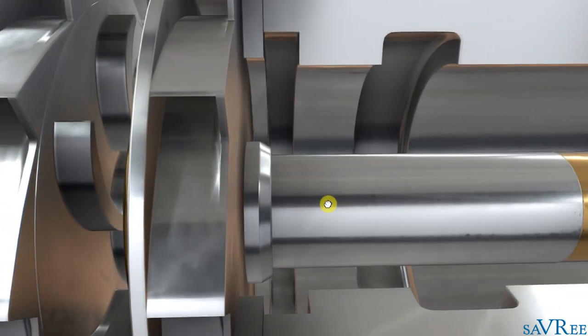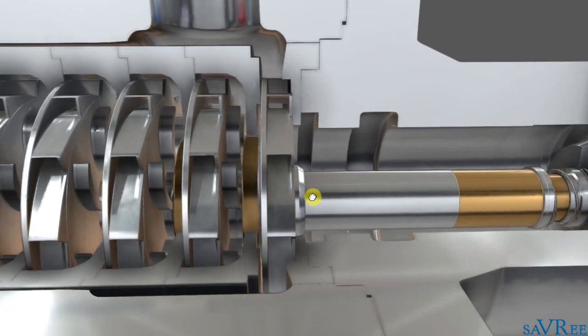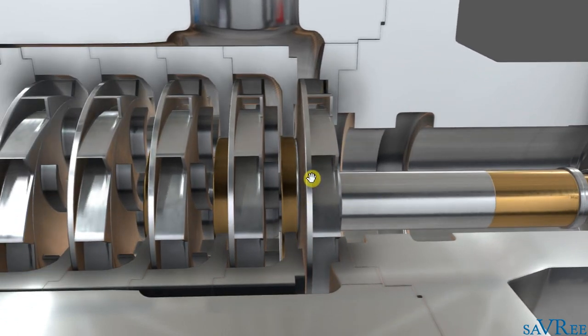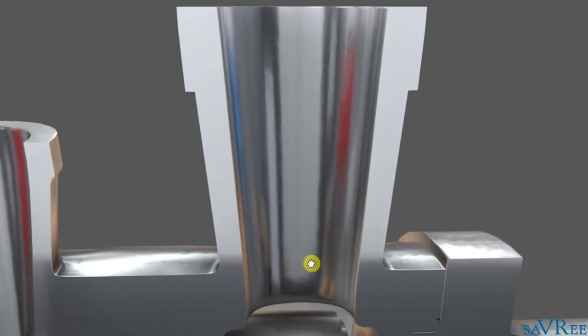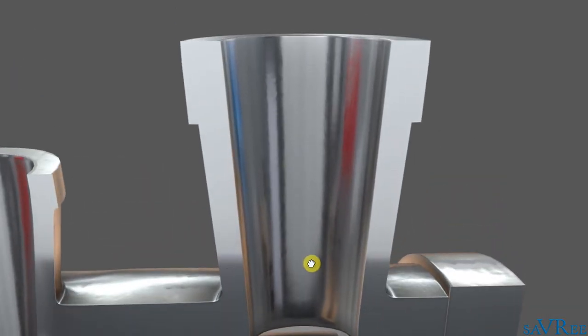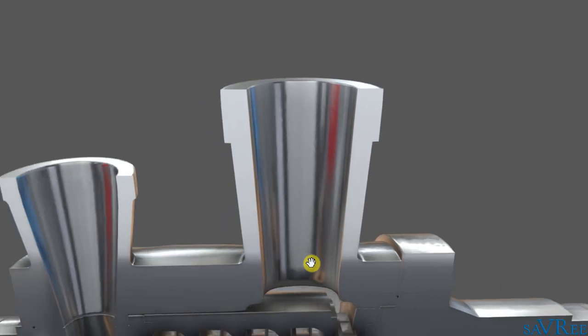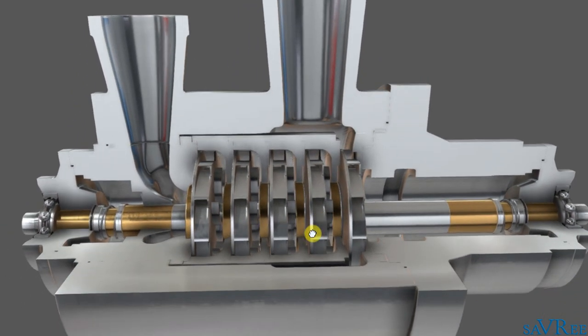Once we get to our final impeller, the liquid will be discharged and it will go out of the top here, out of this discharge pipe. So that is the general layout of the multistage centrifugal pump. But let's now talk in more detail about how it works, and what happens to the liquid as it flows through the pump.